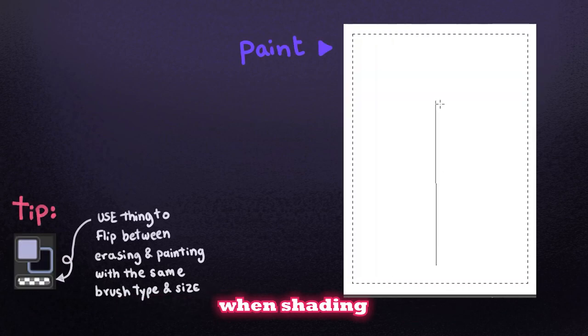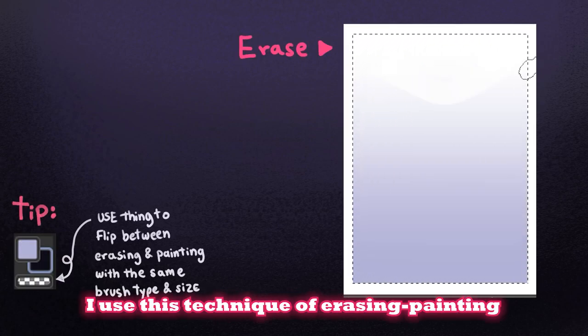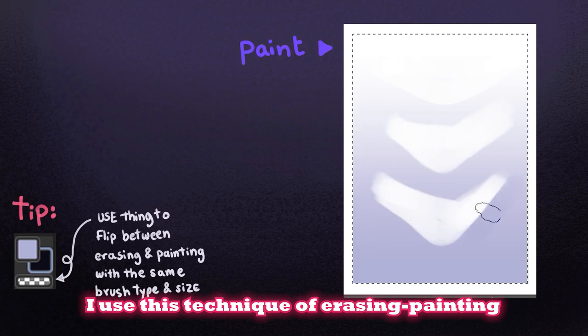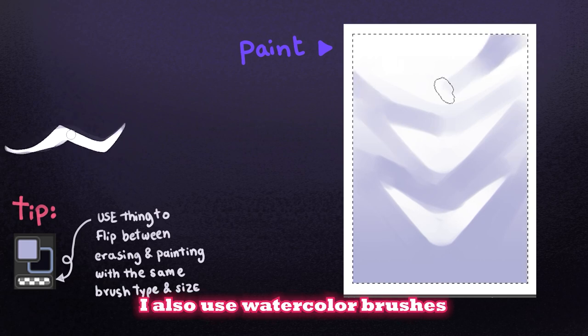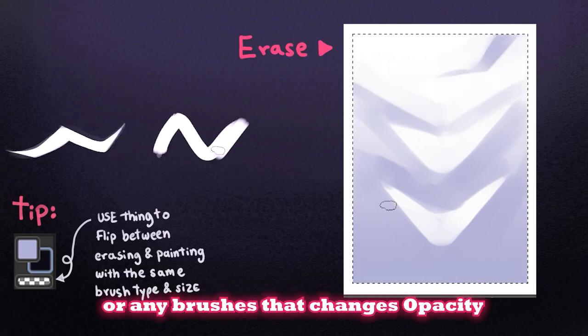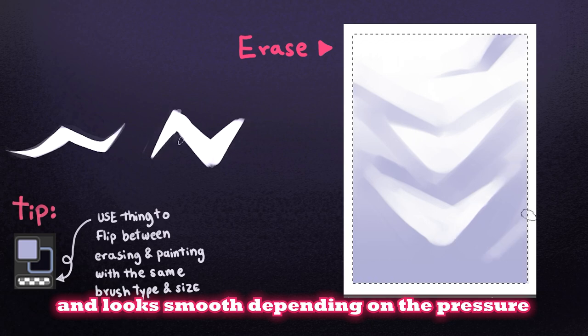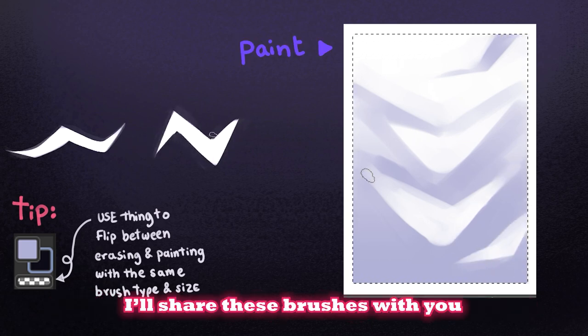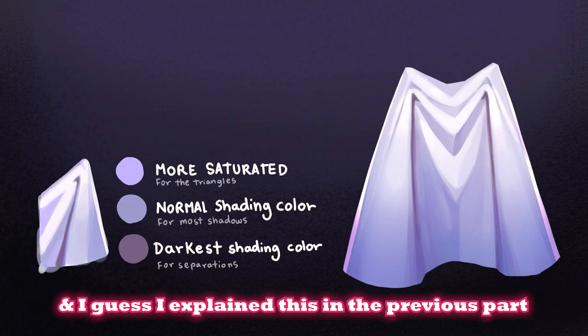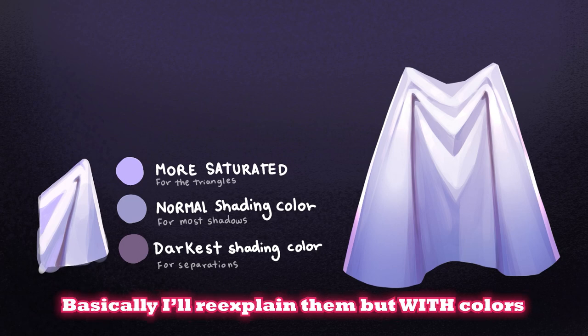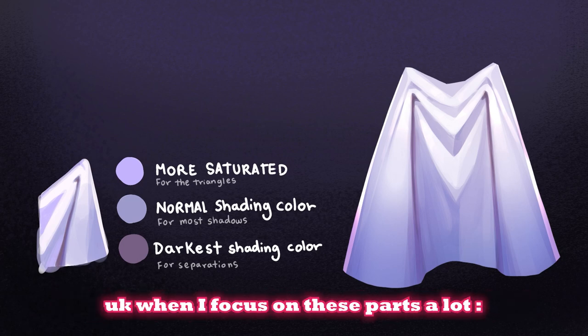Another pre-tip before we start actually shading: I use a technique of erasing, painting, erasing, painting until I get my desired shapes. I also use watercolor brushes or any brushes that change opacity and look smooth depending on the pressure applied. I share these brushes — they should be in the card above or in the description.